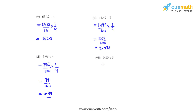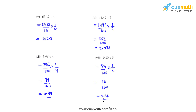Coming to the eighth bit, which is the last bit of this question. 0.80 can be written as 80 over 100. Division is replaced with a multiplication sign and 5's reciprocal is 1 over 5. 80 divided by 5 is 16, and 16 divided by 100 is 0.16. So this is the answer for the eighth bit and this is how we solve this problem.